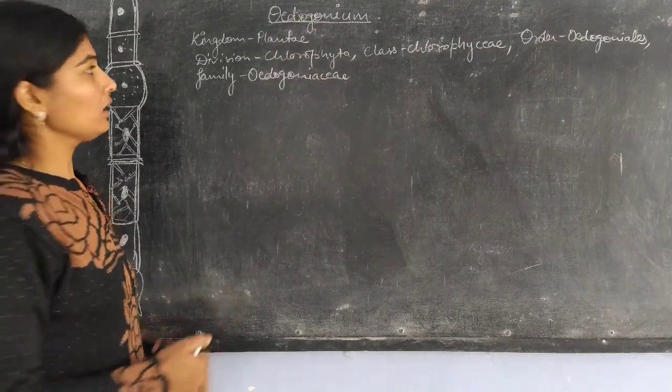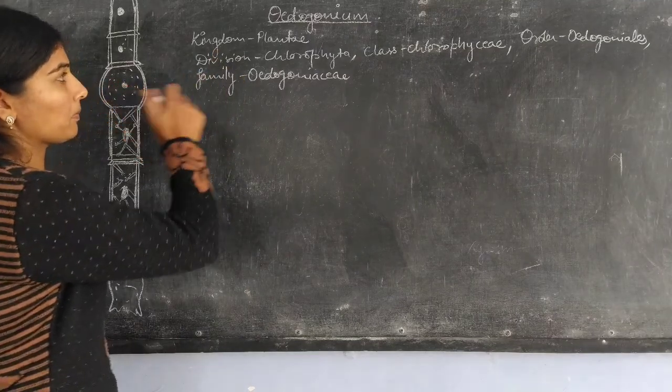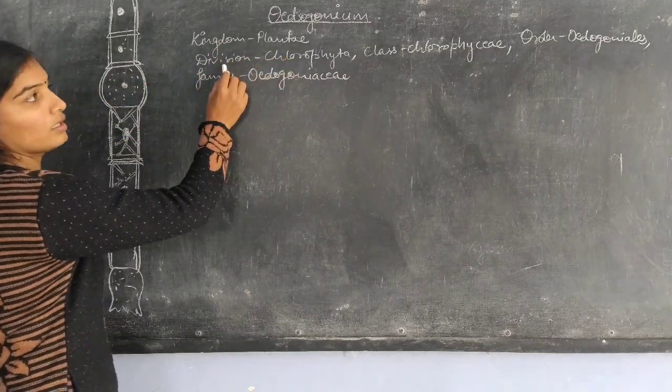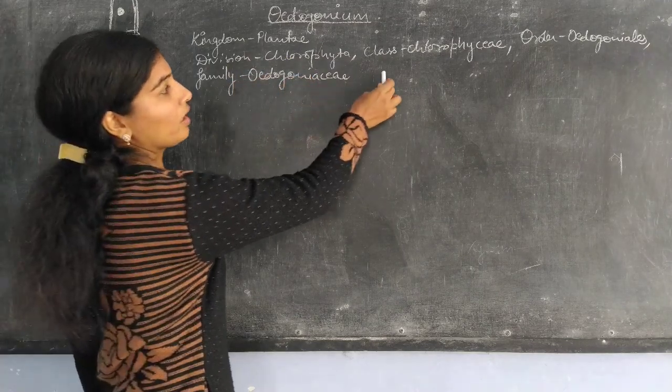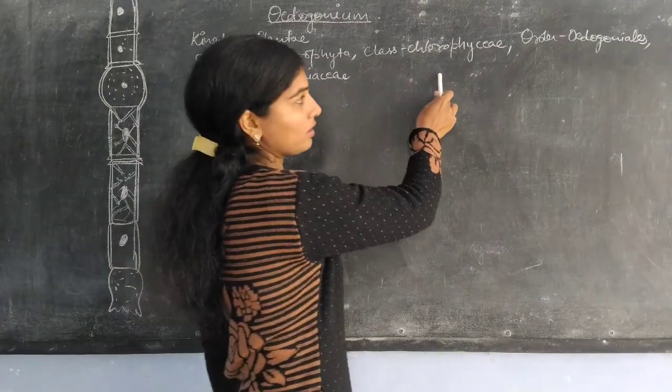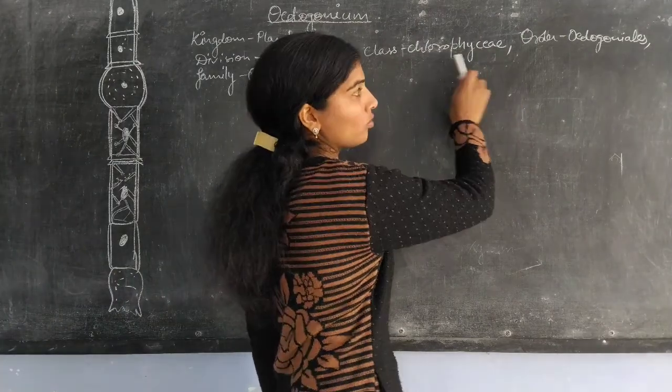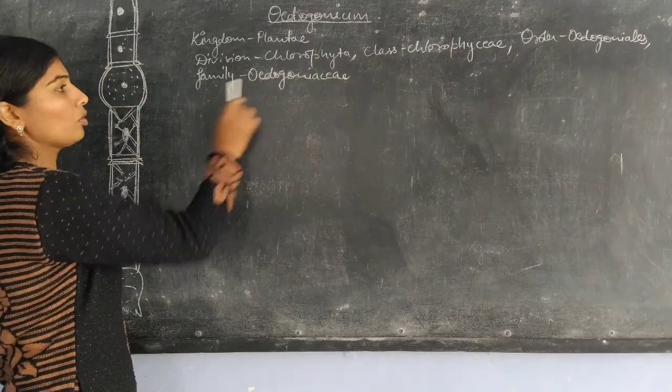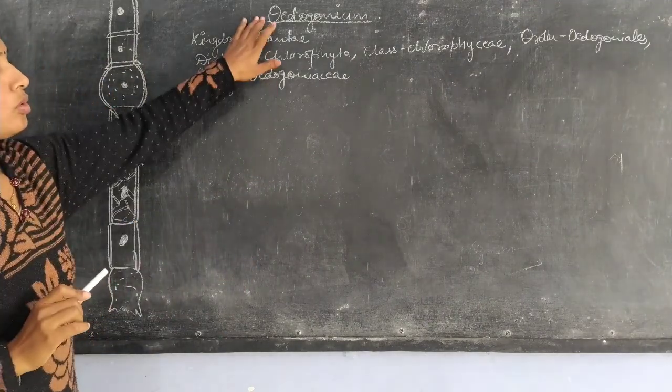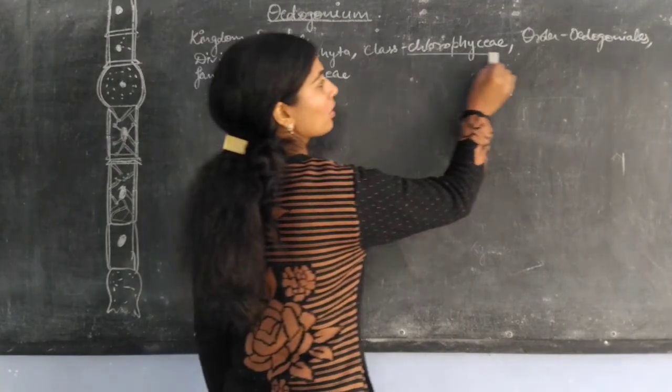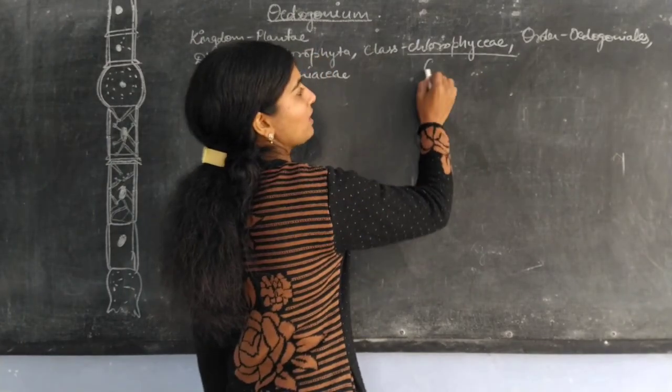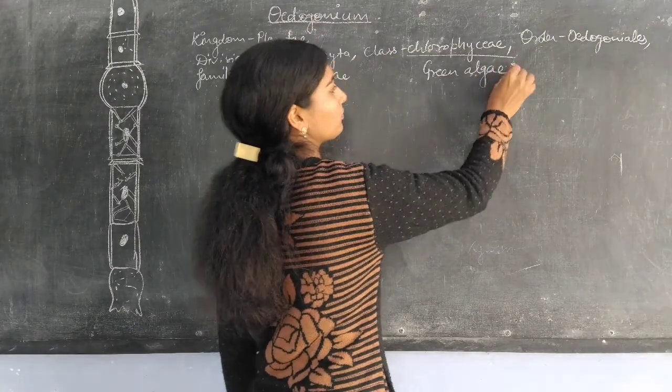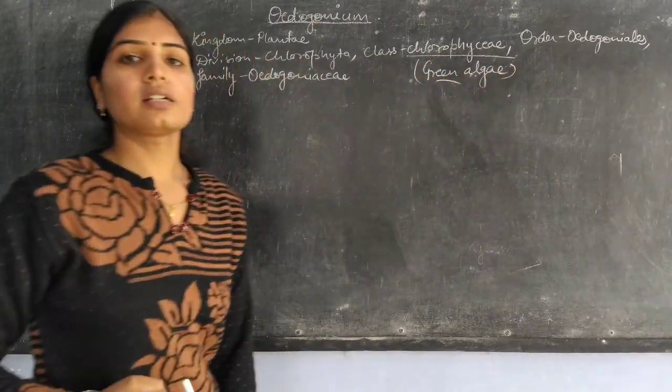Oedogonium is a green algae classified as kingdom Plantae. It is placed in the phylum Chlorophyta, class Chlorophyceae, order Oedogoniales, and family Oedogoniaceae. This Oedogonium is a green algae.